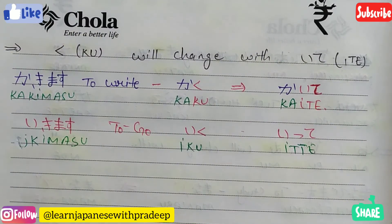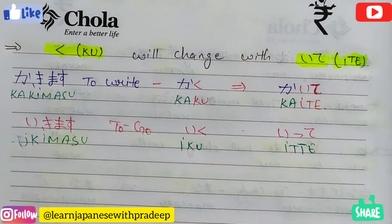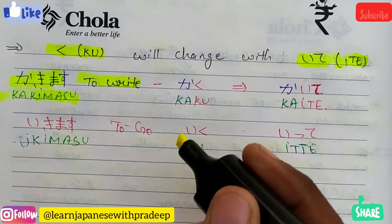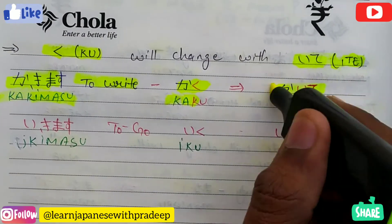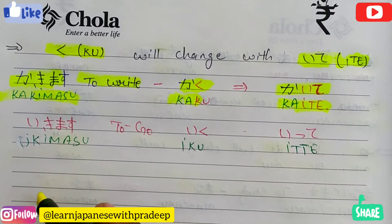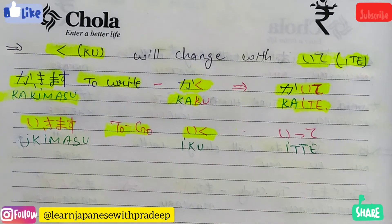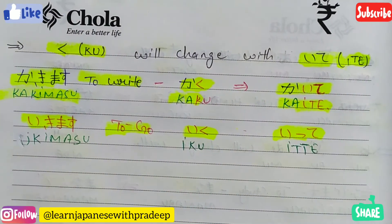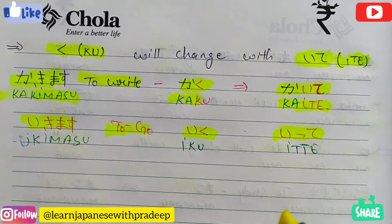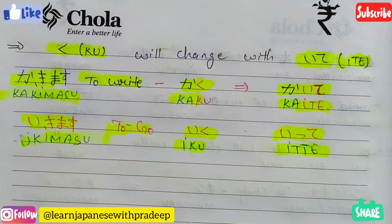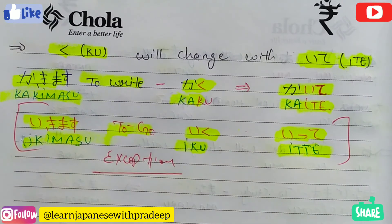If you are having ku at the end after changing to dictionary form, then it will become ite. For example, kakimasu means 'to write'. Dictionary form of kakimasu is kaku, having ku at the end, so the te form of kakimasu would be kaite. There is also an exception: ikimasu. Dictionary form is iku, which means 'to go'. Technically it should have ite at the end, but this is an exception — the te form of ikimasu is itte. I hope you have understood how to make te form.